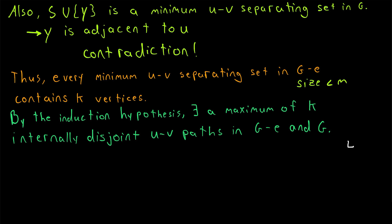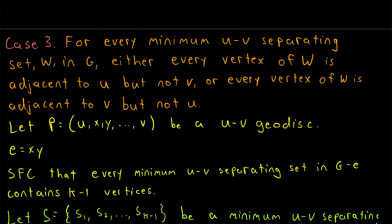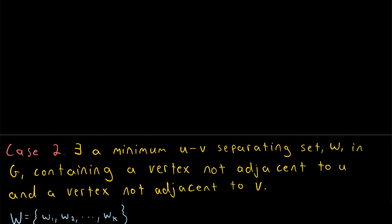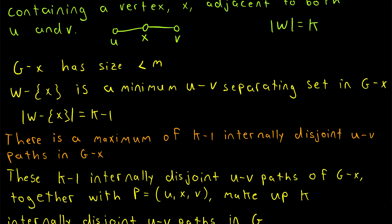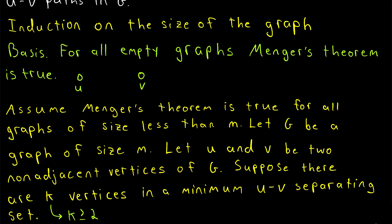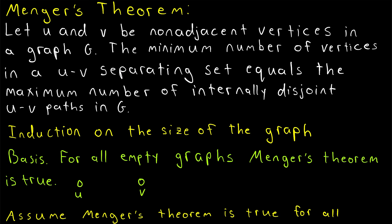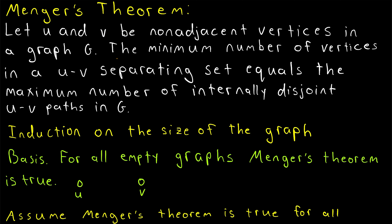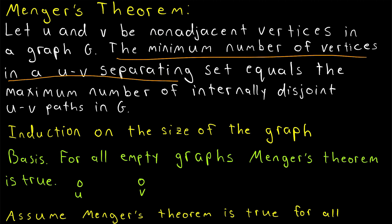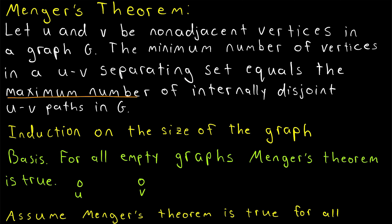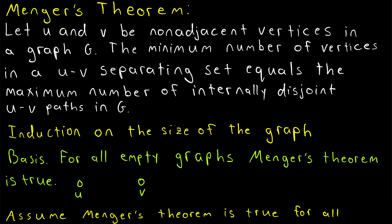And my friends, if you're still watching, thank you so much. That's the end of the proof. Those three cases cover all possibilities for the minimum u-v separating sets in our graph G, so we have now completed the proof of Menger's theorem. We proved that for two non-adjacent vertices u and v in a graph G, the minimum number of vertices in a u-v separating set equals the maximum number of internally disjoint u-v paths in that graph. Beautiful theorem and a beautiful proof.